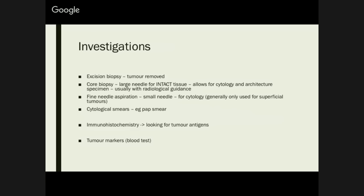Investigations that tumours undergo. First, there's your excision biopsy — that's when your entire tumour is removed. If it's harder to excise, you can opt for a core biopsy, where a large needle removes intact tissue so you get to see the general architecture as well as cytology — done with radiologic guidance. Fine needle aspirations are for really superficial tumours — you can just get a small needle and remove some cells, but because you're not going to keep your architecture, you can only test for cytology. Cytological smears, like a pap smear, are also similar to fine needle aspirations.